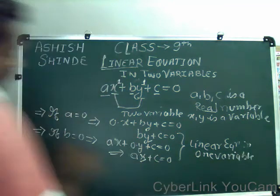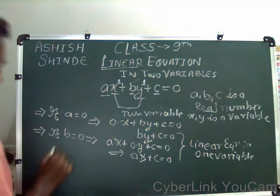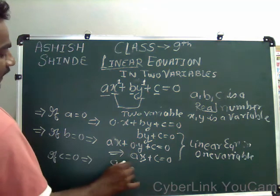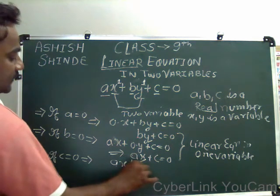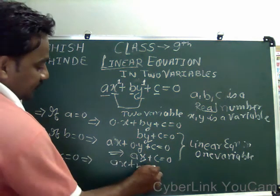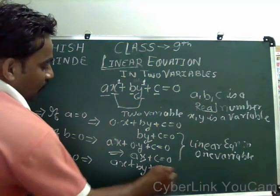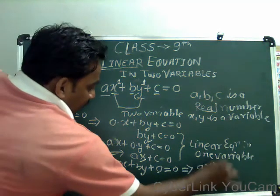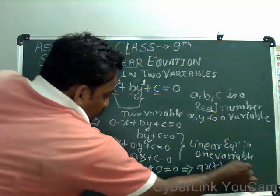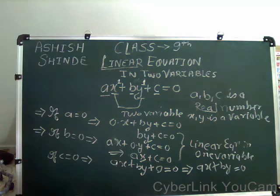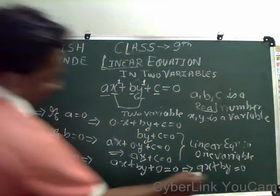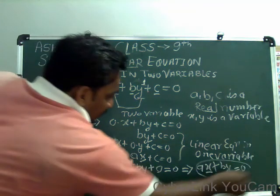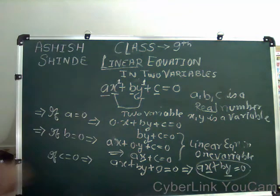Now suppose if C equals 0, that implies Ax plus By plus C equals 0 becomes Ax plus By equals 0. In this case X and Y are two variables, therefore this equation is called a linear equation in two variables.